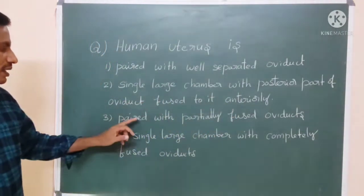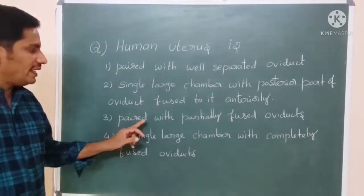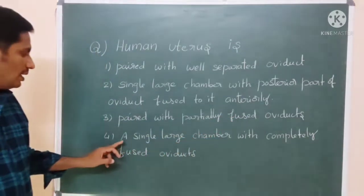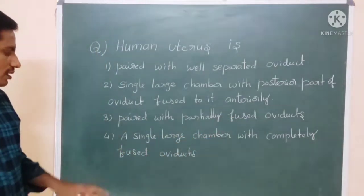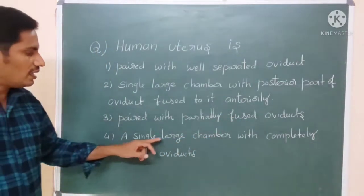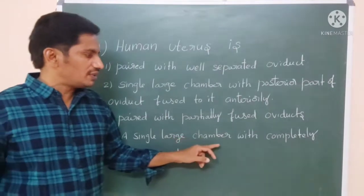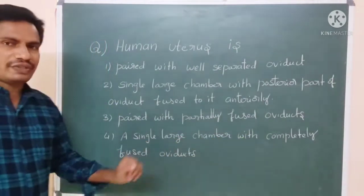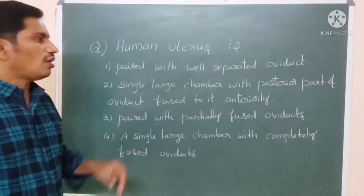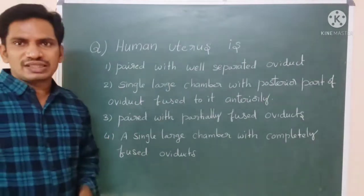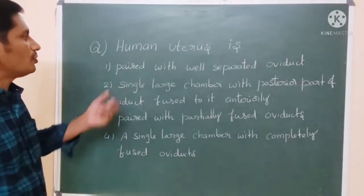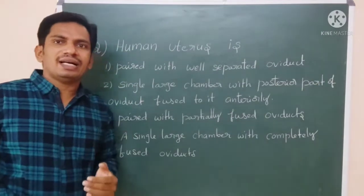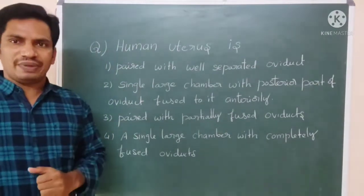Third option is: paired with partially fused oviducts. And the fourth one is: a single large chamber with completely fused oviducts. Before solving this, you should know about the uterus — is it paired or unpaired?